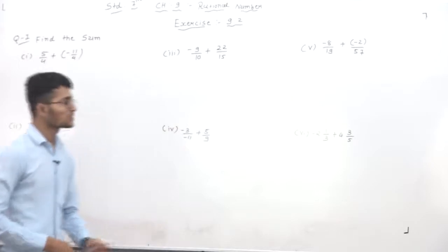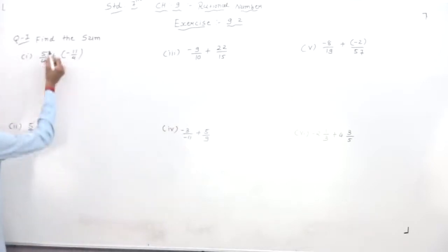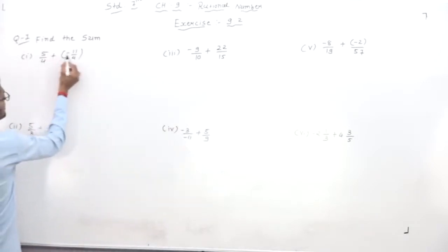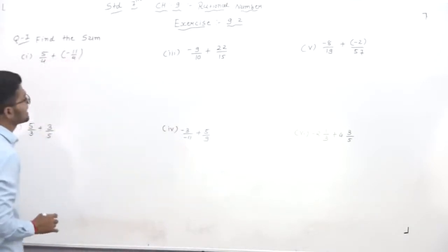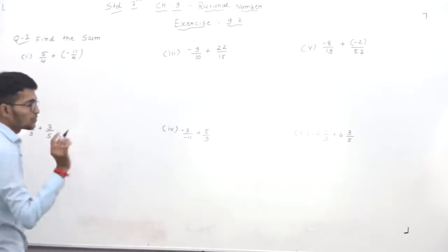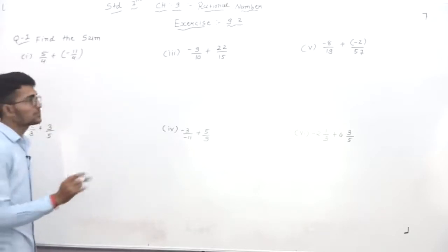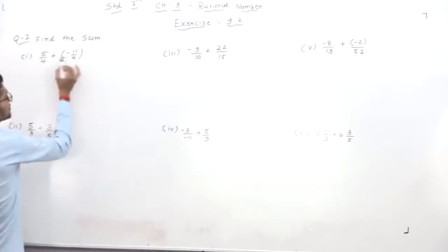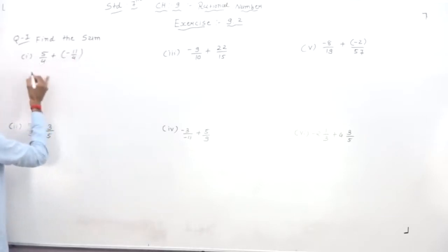Let's start the first question: 5/4 + (-11/4). First of all, dear students, if a rational number is given inside a bracket, your first step is to remove the bracket.